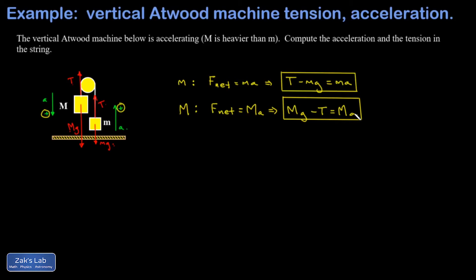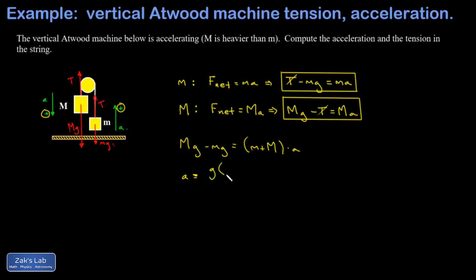These two equations are already conveniently set up for elimination. Adding the left-hand sides, the T's cancel and I get big Mg minus little mg. On the right-hand side I get little m plus big M times a, giving an immediate answer for acceleration. Factoring g out of the left-hand side: a equals g times the quantity (M minus m) divided by (M plus m).